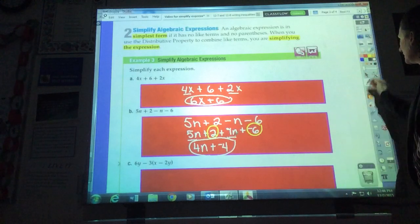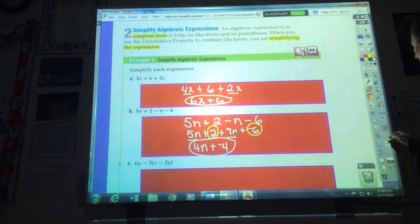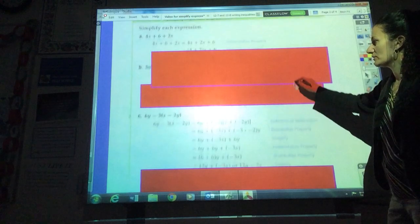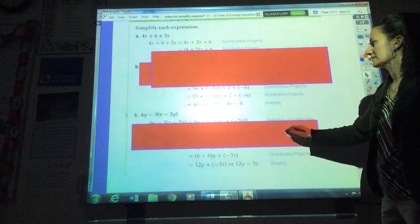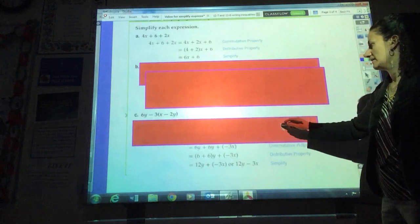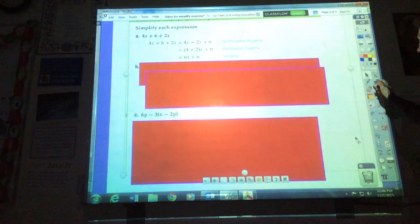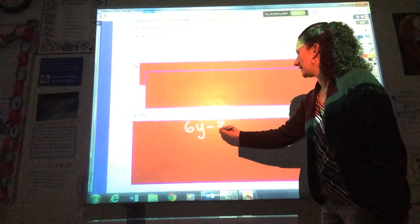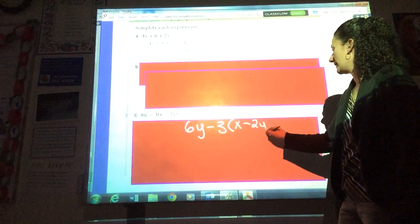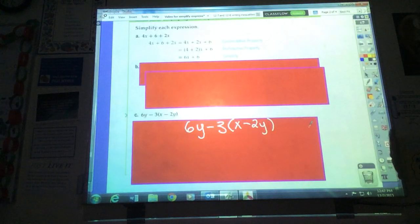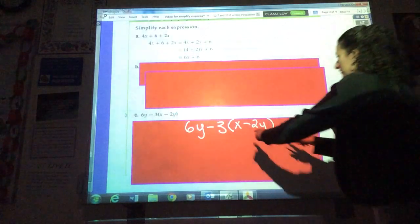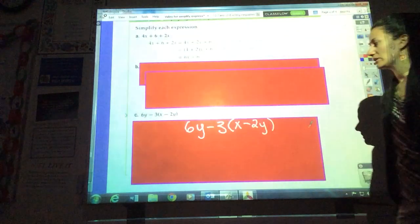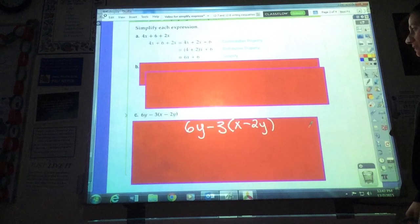Look down at this third example here. I'm actually going to move everything up. And you know what, you can always pause the video if I'm talking too fast. Go back and write down whatever you missed. Let's take a look at that last one there. It says 6y minus 3 times parentheses x minus 2y. I've got a lot of things going on here. I've got some like terms, I've got parentheses, so I've got distributive property, and I've got some subtraction going on as well. So I've got to be extra careful to make sure I simplify this one correctly.